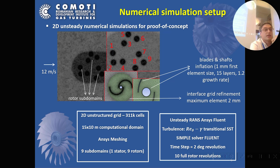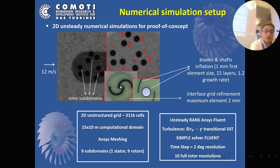Unsteady Reynolds-averaged Navier-Stokes simulations were performed in ANSYS Fluent, with turbulence modeling involving a four-equation Reynolds-theta-gamma transitional SST model. The time step corresponds to a 2-degree revolution of the turbines, and for each case 10 full revolutions were simulated.